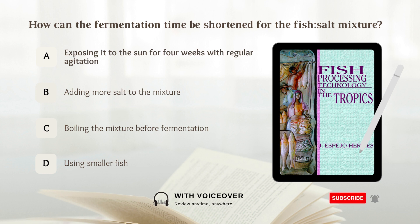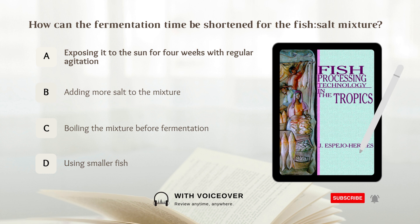A) Exposing it to the sun for four weeks with regular agitation. The fermentation time is shortened when the mixture is exposed under the sun for four weeks with regular agitation, then allowed to develop the flavor and aroma for six to eight weeks.